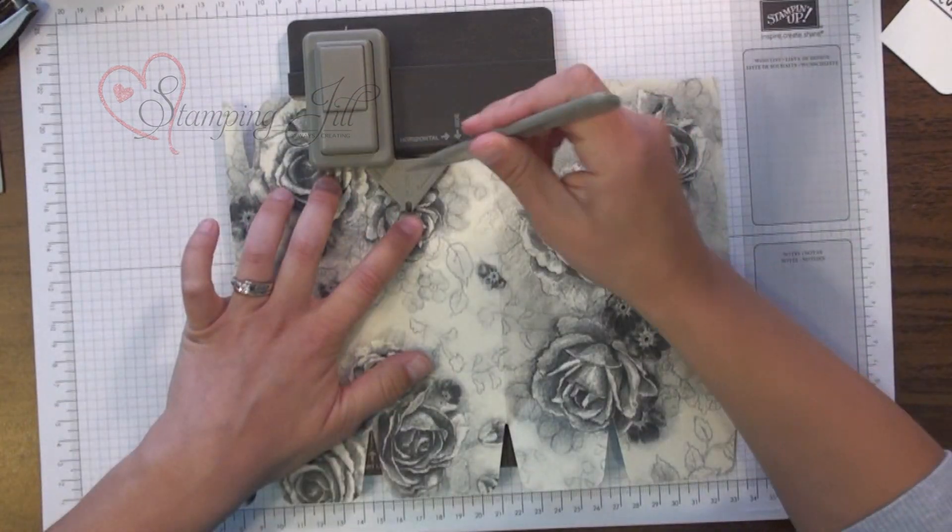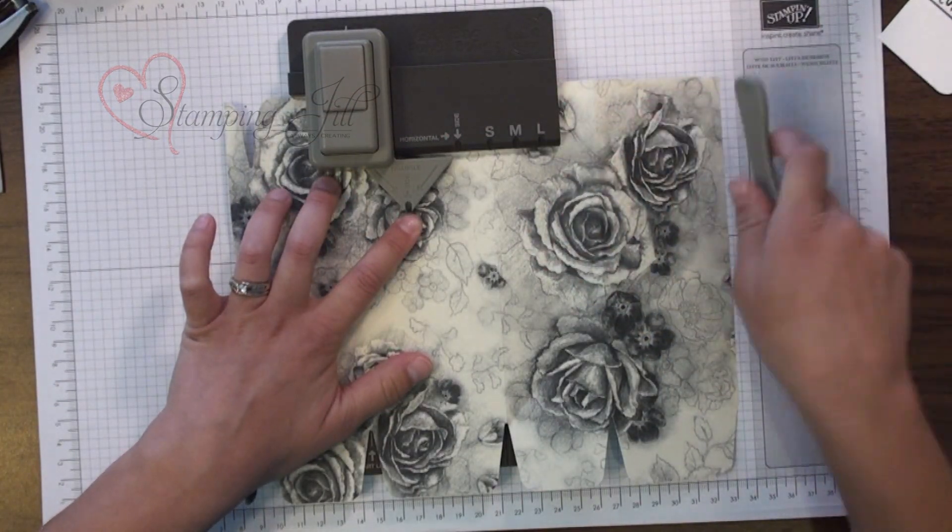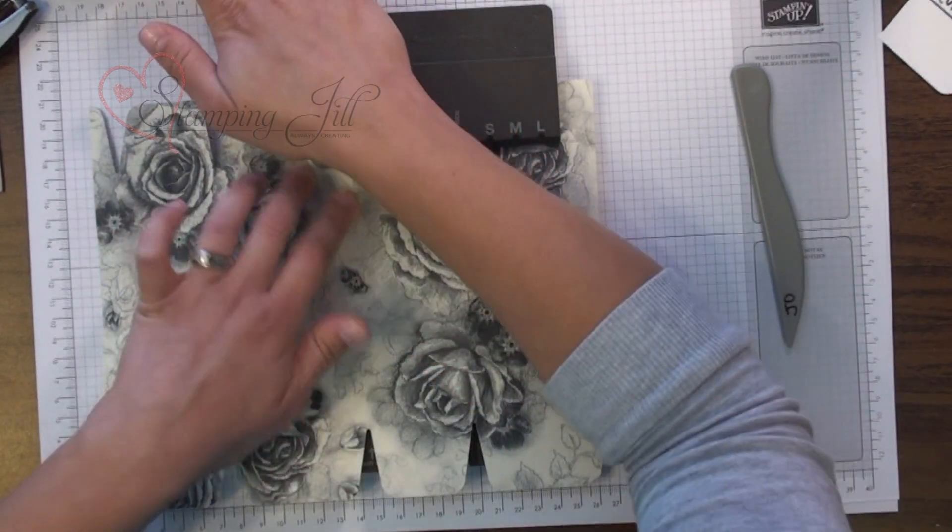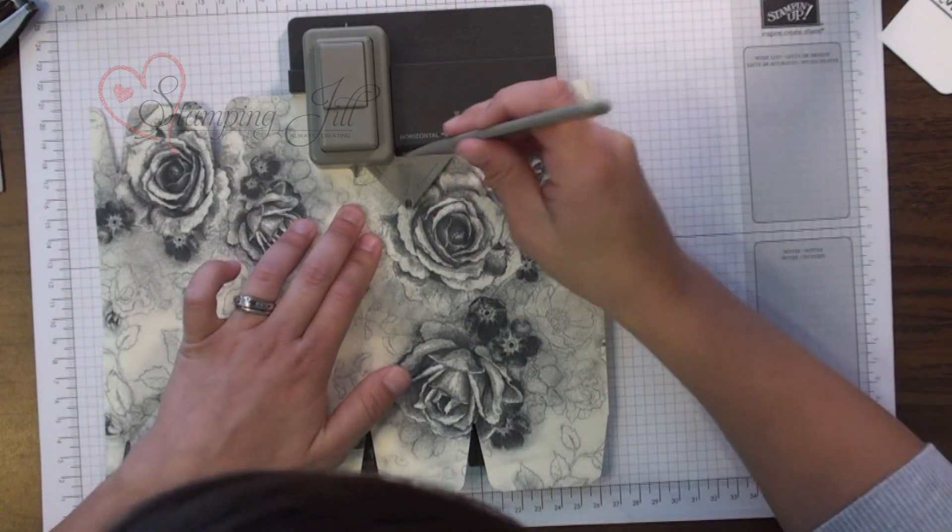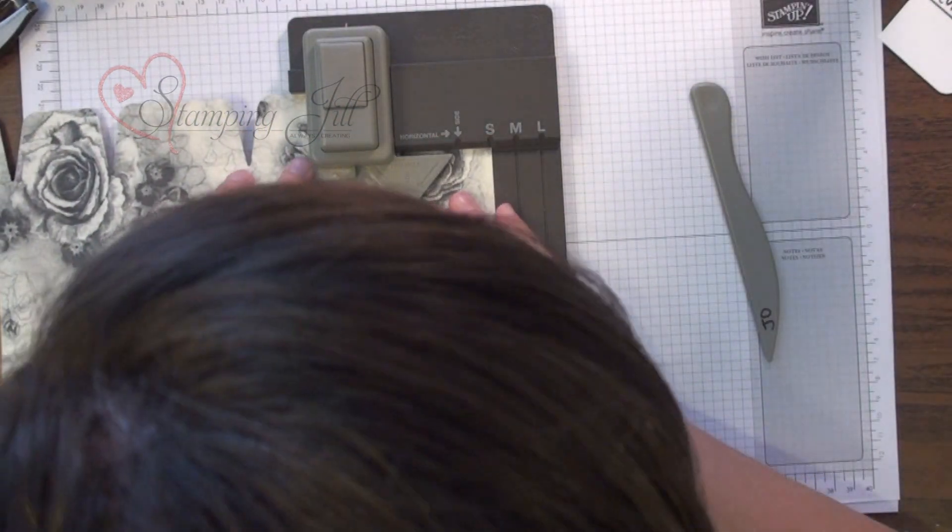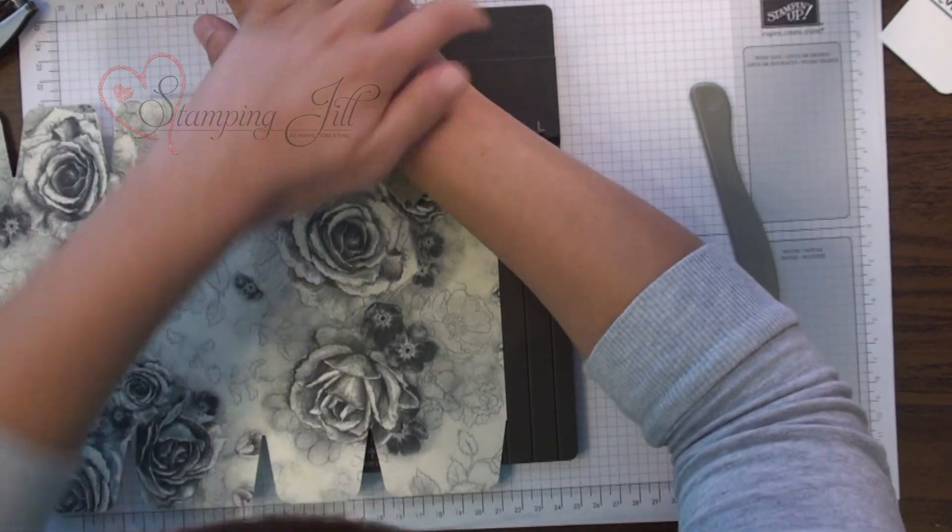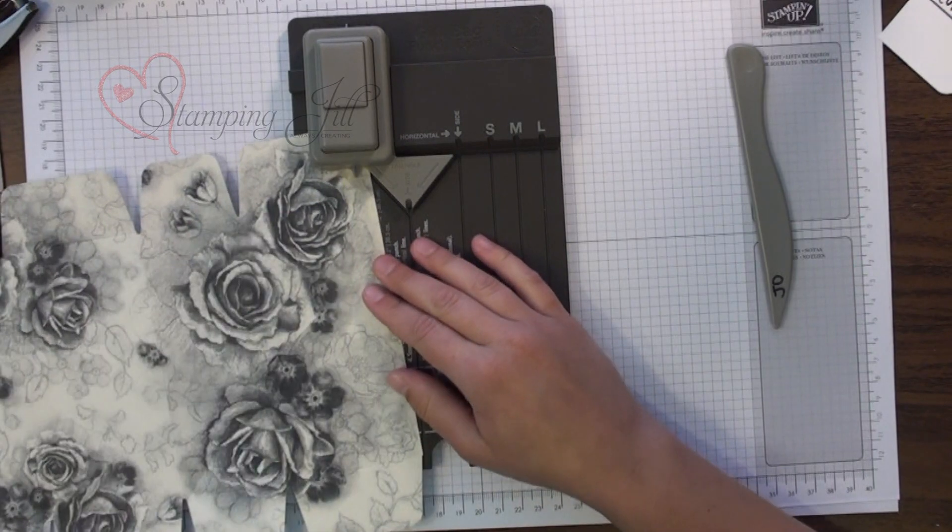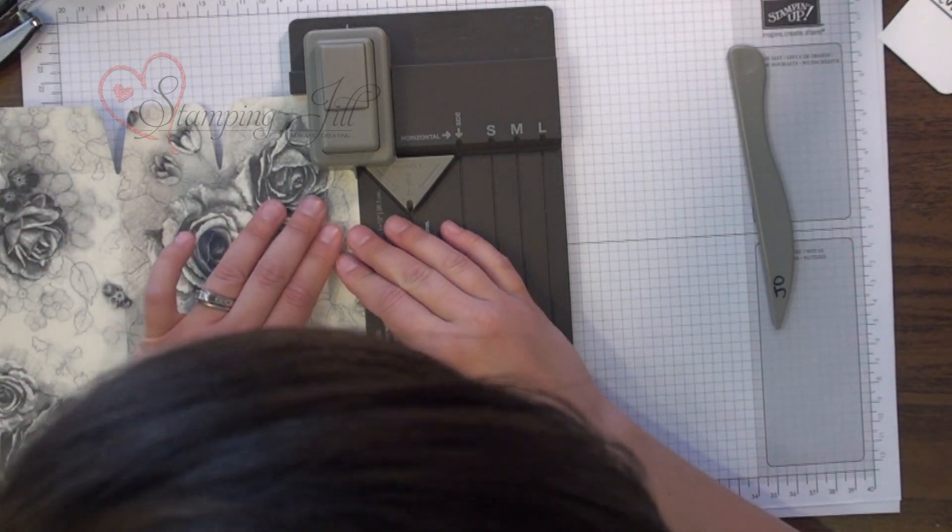You're also going to do the horizontal score line. So line it up again here and punch and again here punch and punch here on the end.